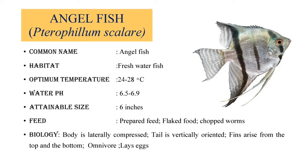The next ornamental fish is Angelfish. The scientific name is Pterophyllum scalare. The common name is Angelfish. It lives in freshwater habitat. The optimum temperature is 24 to 28 degrees C. The water pH should be between 6.5 to 6.9. It attains 6 inches in its lifespan. The feed which it prefers most is prepared feed, flaked foods, and chopped worms. The body of the fish is laterally compressed and the tail is vertically oriented. Basically, this fish is omnivore and it is egg-laying.